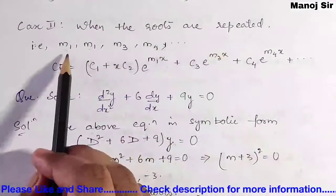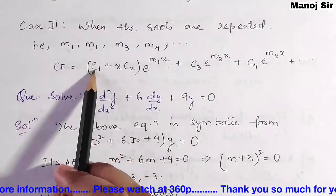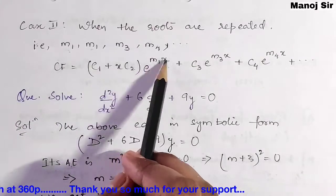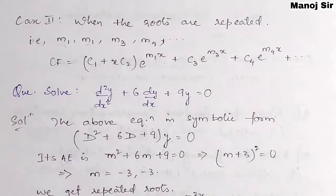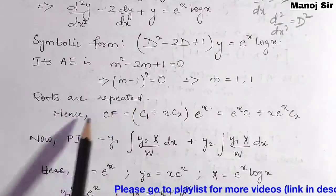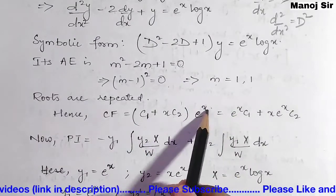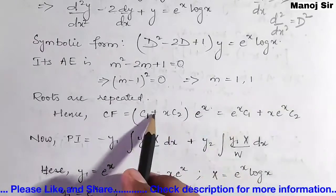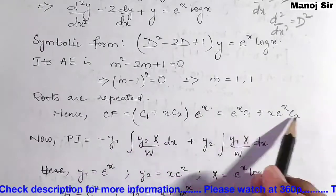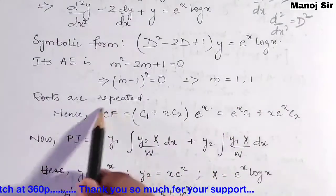When roots are repeated, that is m1 and m1, the complementary function is CF = (c1 + x·c2)·e^(m1·x). Since m1 = 1, we get CF = (c1 + x·c2)·e^x, which expands to c1·e^x + c2·x·e^x.